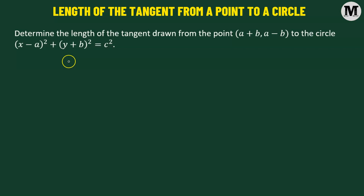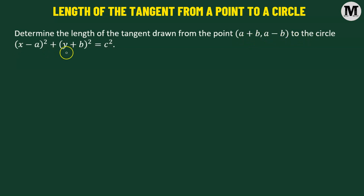In this problem we need to determine the length of the tangent drawn from the point having the coordinates a plus b comma a minus b to the given circle.